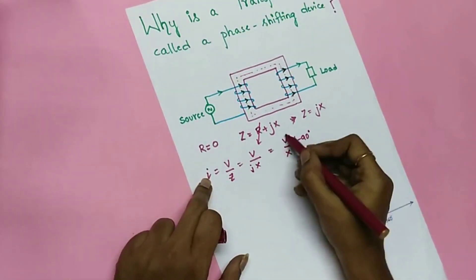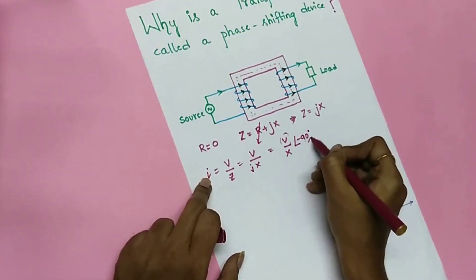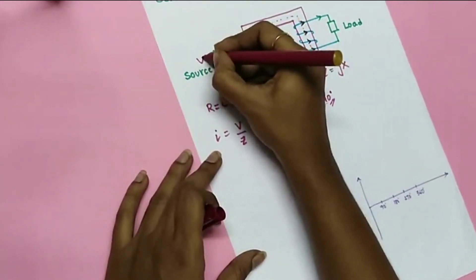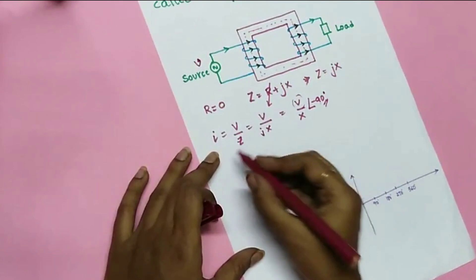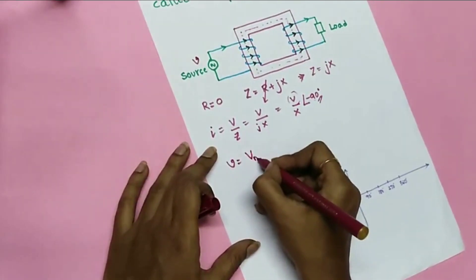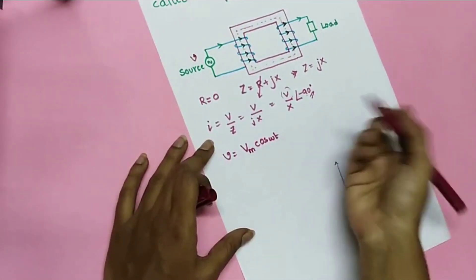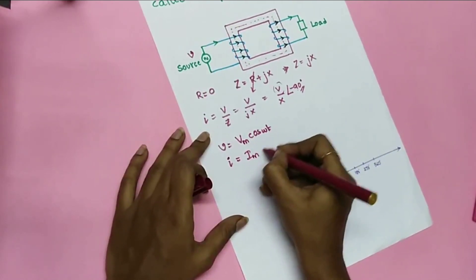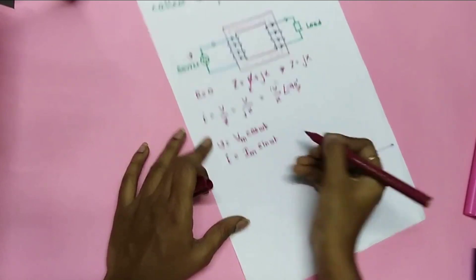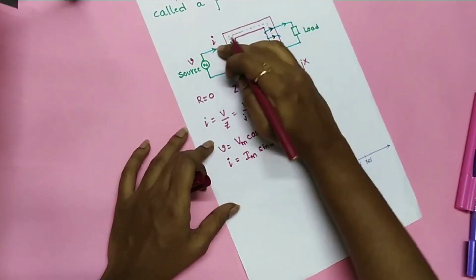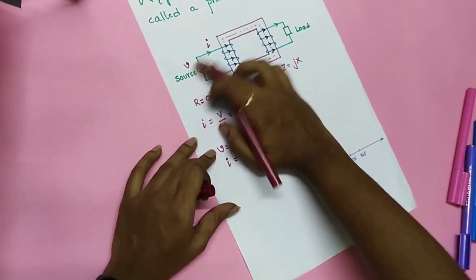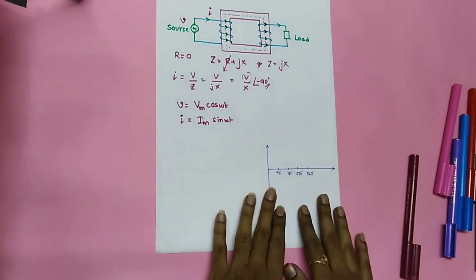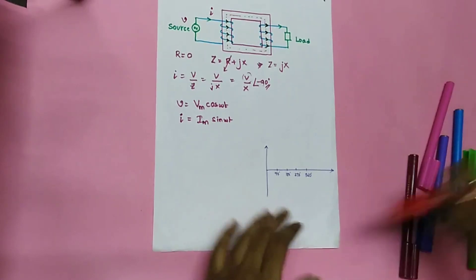When j goes to the numerator it gives an angle of minus 90 degrees, meaning current I is lagging voltage by 90 degrees. So if we apply a voltage V equals Vm·cos(ωt) at the input, then we get a current I equals Im·sin(ωt) at the input, which lags the voltage by 90 degrees.